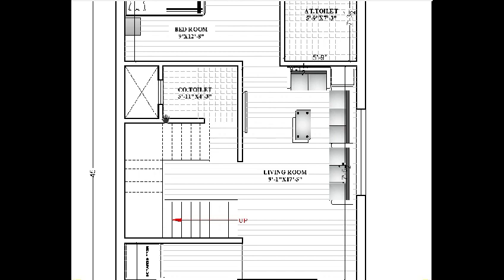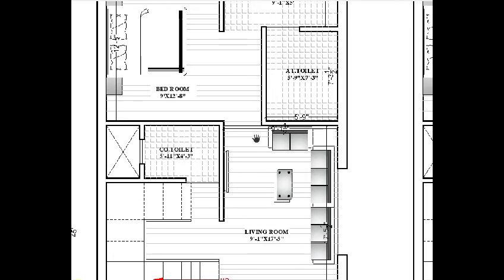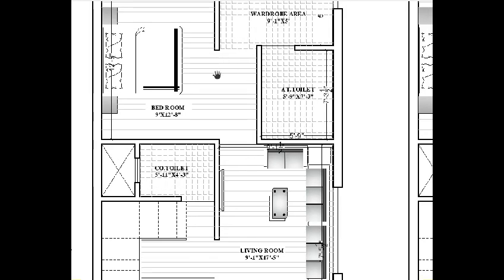Behind this space is an OTS — open to sky — that goes from ground floor to upper floor level. This serves as ventilation for the common toilet. After this whole semi-public space, here is the fully private area.